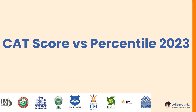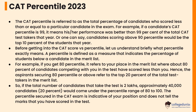The CAT percentile refers to the total percentage of candidates who scored less than or equal to a particular candidate in the exam. For example, if a candidate's CAT percentile is 99, it means his or her performance was better than 99 percent of the total CAT test takers that year. Candidates scoring above 90 percentile would be the top 10 percent of the students that year.